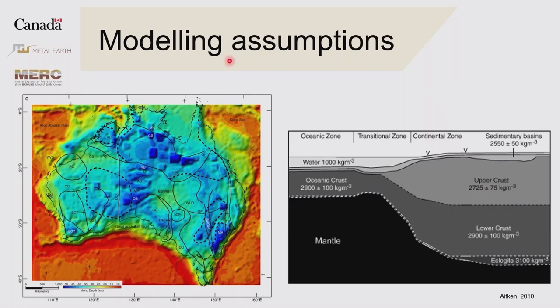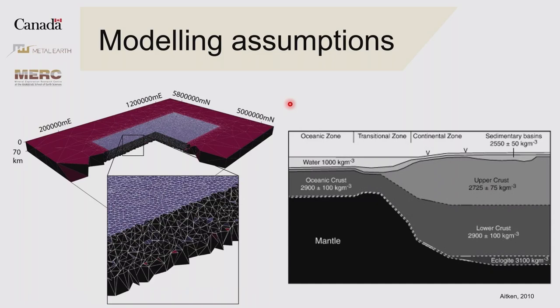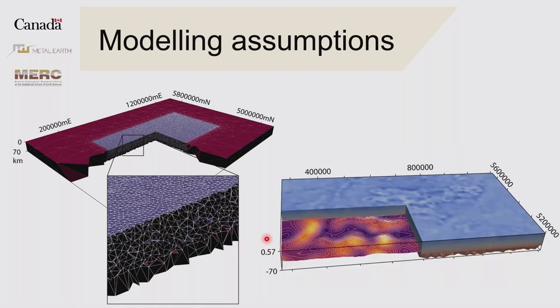Where we improve on things is we allow for complexity throughout the crust — we don't assume fixed densities. We instead solve for the distribution of density through a number of cells. This is the mesh of the Abitibi, just the skeleton, and then density values were solved for iteratively inside each of these cells through the inversion process.